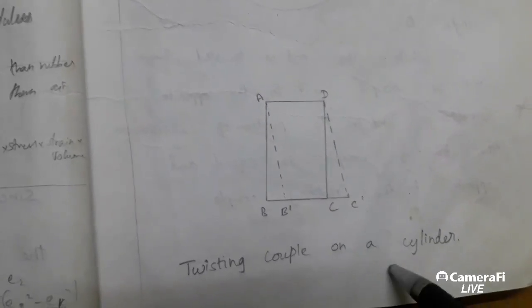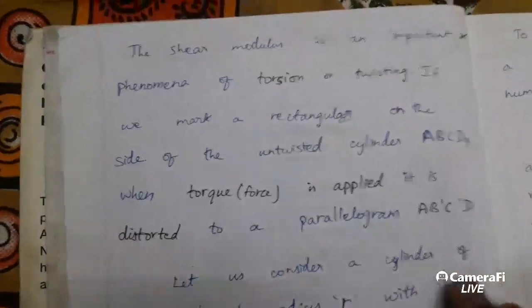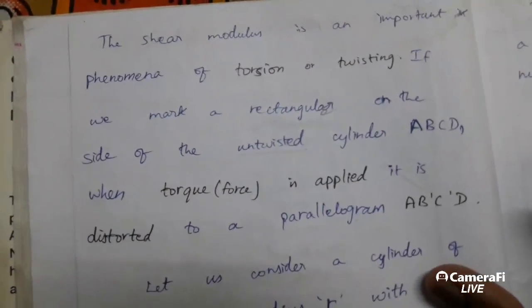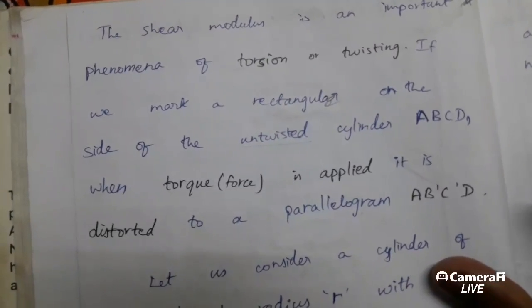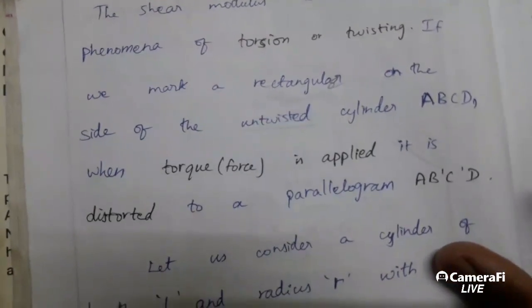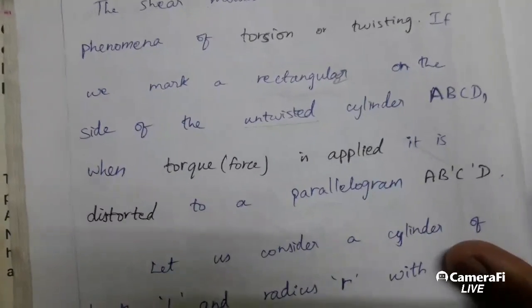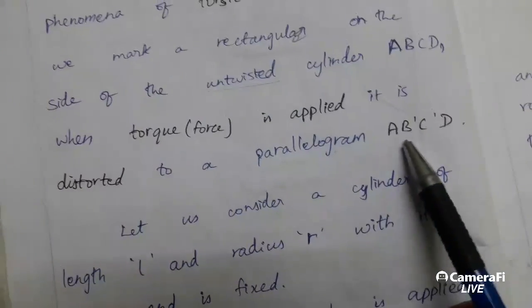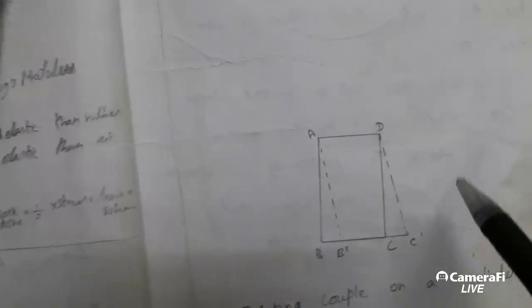So this is the twisting couple on a cylinder. The shear modulus is an important phenomenon of torsional twisting. If you mark a rectangle on the side of the untwisted cylinder ABCD, when torque or a force is applied, it is distorted to a parallelogram A, B prime, C prime, and D. As we've seen before, ABCD turns into A, B prime, C prime, and D.